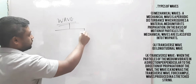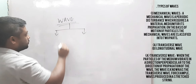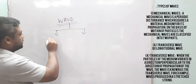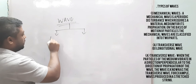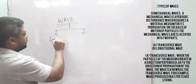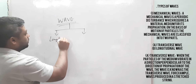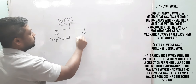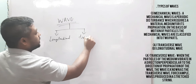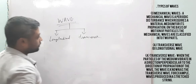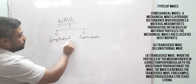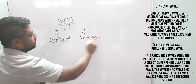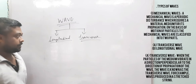Waves can be of various types, and basically we are going to discuss two types: longitudinal waves and transverse waves.